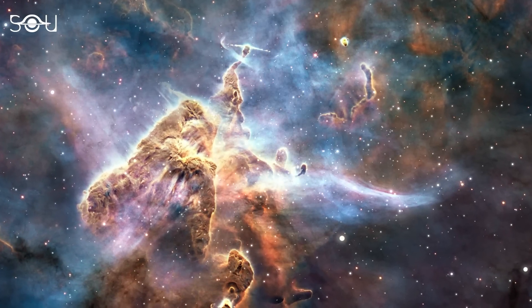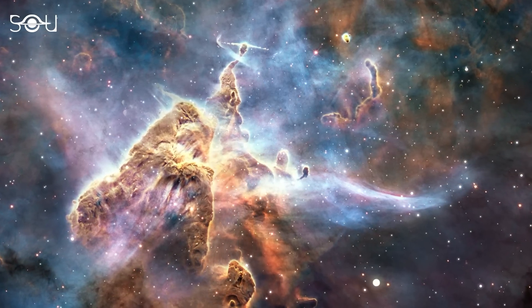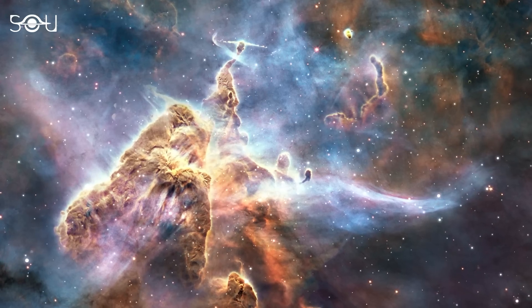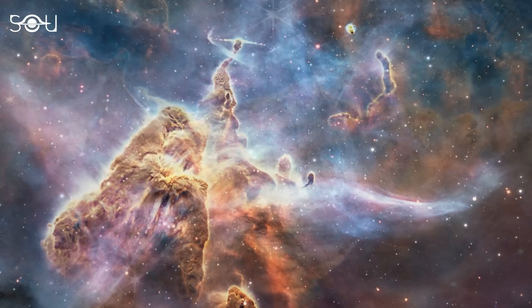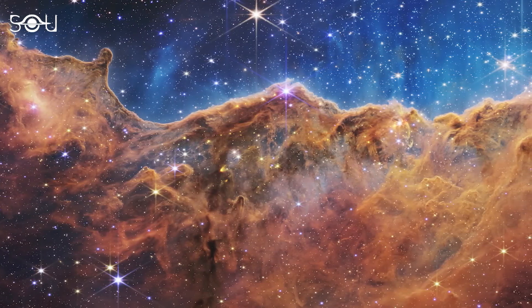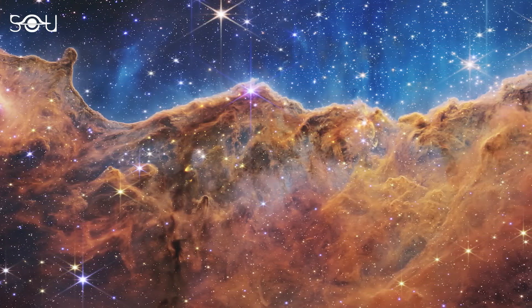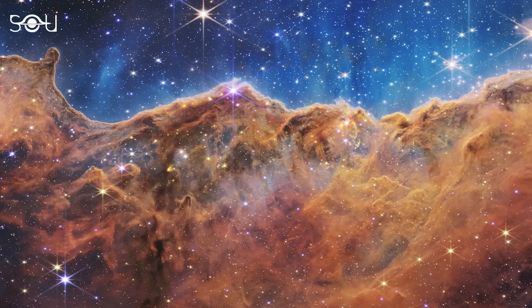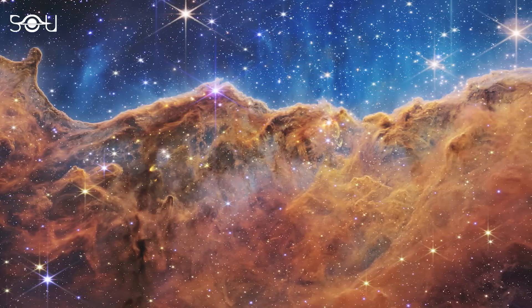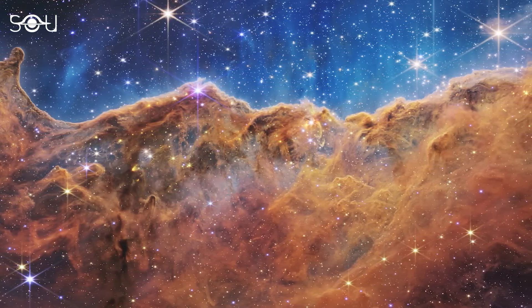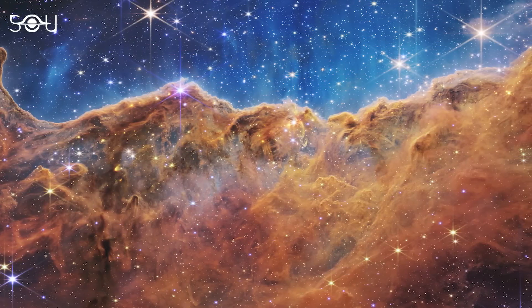The Carina Nebula is perhaps the most beautiful image of the first set. Unlike the Southern Ring Nebula, this one is a star-forming region about 7,600 light years away. This spectacular image revealing previously invisible areas of stellar nurseries was taken with the joint forces of Webb's NIRCAM and MIRI.